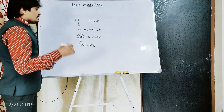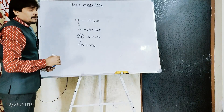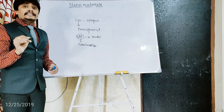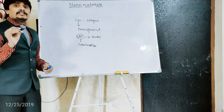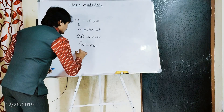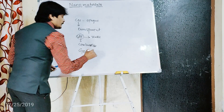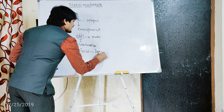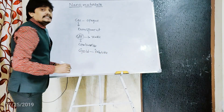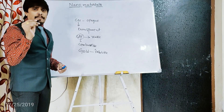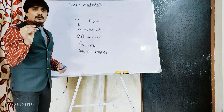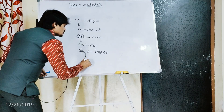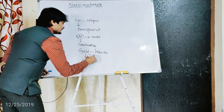Another example: gold in the bulk scale is insoluble. But whenever the same bulk gold material is brought to the nanoscale, it becomes soluble.